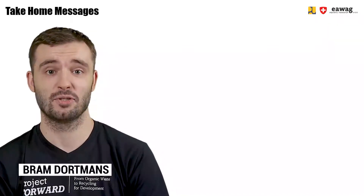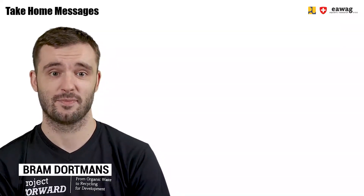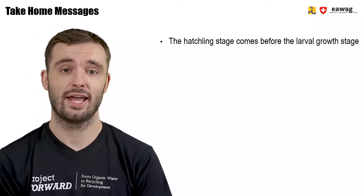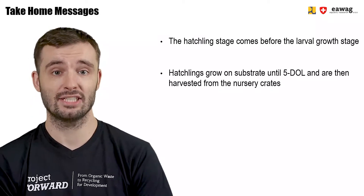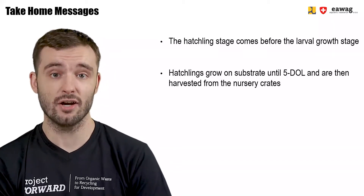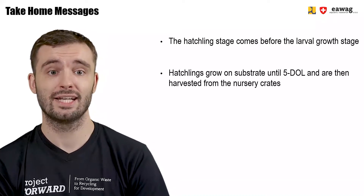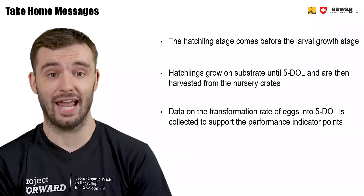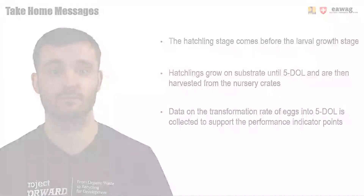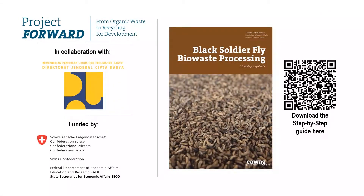We've come to the end of this module on the hatchling stage. We've learned that the hatchling stage in the BSF lifecycle comes before the larval growth stage and after the egg stage. You've learned that the hatchlings in this stage grow on a substrate until they are five-day-old and are then harvested from the nursery crates. You've also learned that data on the transformation rate of the eggs into five-day-old larvae is collected to support the performance indicator points. Thank you for watching this module, part of the e-learning video series on BSF Biowaste Processing. More information can be found in the BSF step-by-step guide, which you can download through the QR code here.